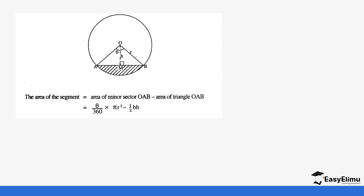Remember, the area of the segment — this shaded region — is going to be the area of the minor sector, which is what we did in the previous lesson, minus the area of the triangle. The area of the sector is angle over 360 times pi r squared, and the area of the triangle is half base times height. Let's do a question together.